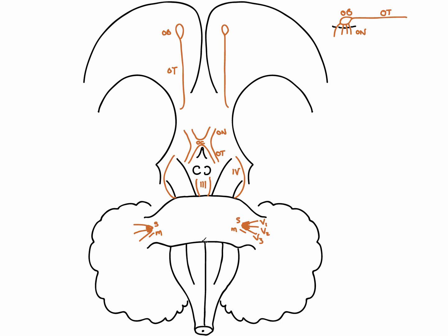Coming away from the pontomedullary junction is cranial nerve number six — the abducens nerve. This supplies just one of the extraocular muscles, the lateral rectus, and passes through the superior orbital fissure.